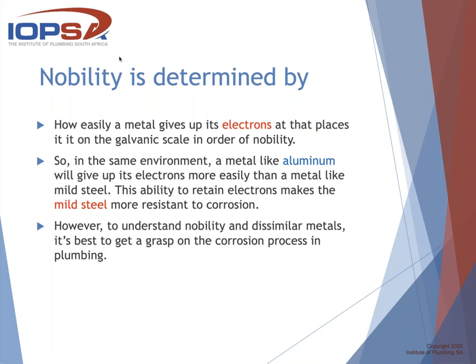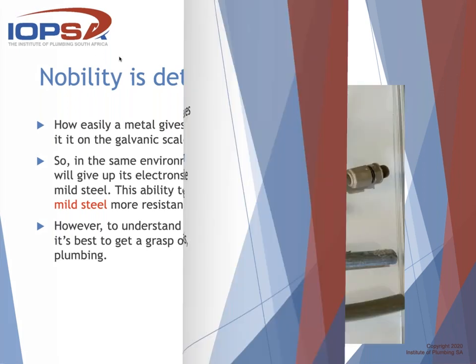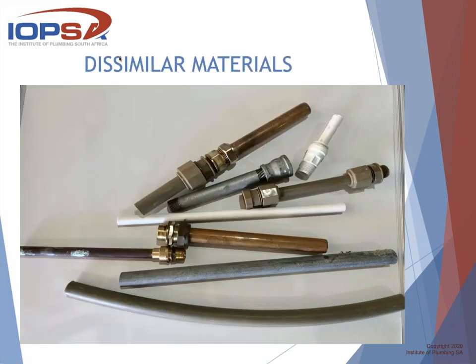Looking at dissimilar materials in plumbing, we have copper, brass, PVC, PEX pipe (polyethylene extrusion pipe), and galvanized pipe — galvanized being mild steel coated with zinc. Bear in mind, as soon as you thread that galvanized pipe, you're opening it back to the bare metal again. So the threaded part is plain mild steel — it's no longer galvanized.